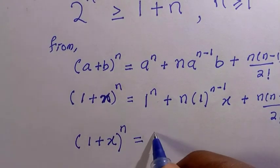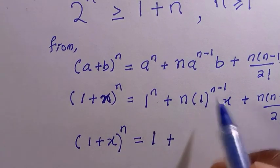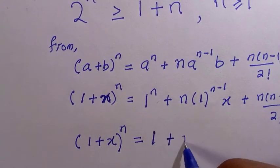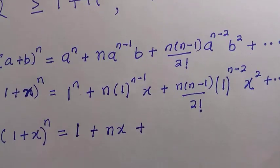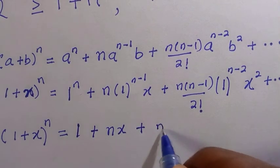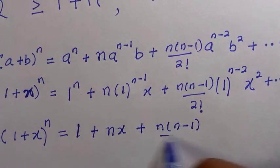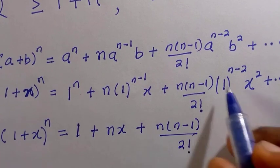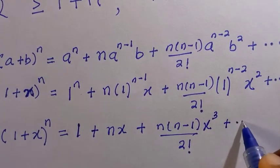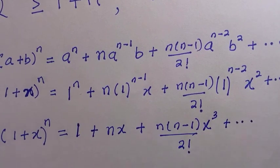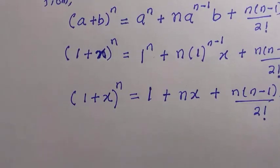And we have 1 plus x raised to the power of n equals to: the first term is 1 at any value of n, then we have nx plus n bracket n minus 1 divided by 2 factorial, x raised to the power of 2 plus dot dot dot. So that's how it continues.